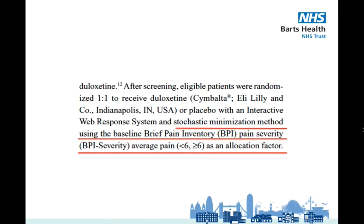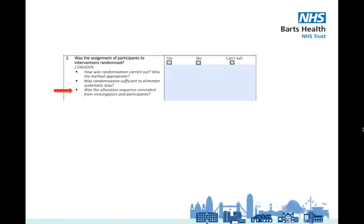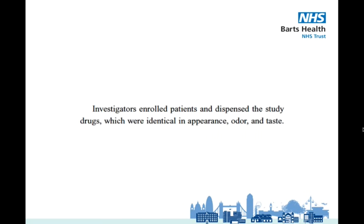The final consideration point asks: was the allocation sequence concealed from investigators and participants? This information is present on page 810. The trial is double-blind, the allocation sequence was concealed from investigators and participants, and the drug and the placebo looked the same. So we can answer yes to this consideration point and we can answer yes to question 2.